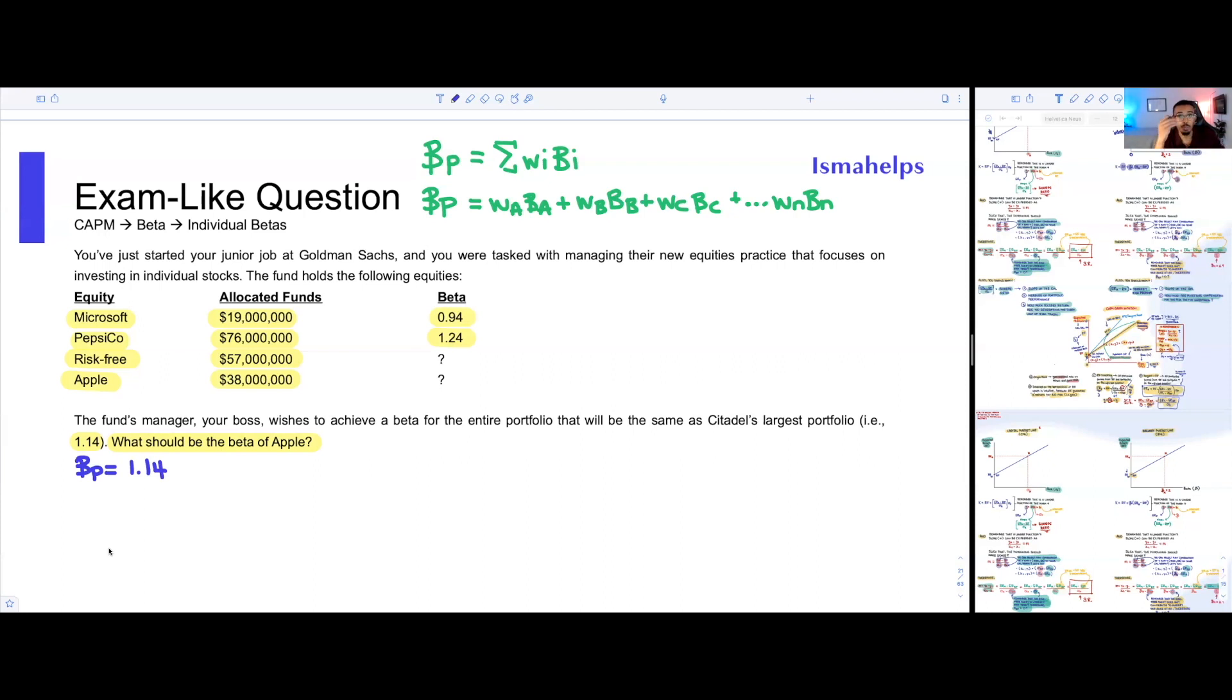They told you what they want the beta to be for the entire portfolio. So all that you have to do is go back to your formula, look for beta P, in other words, the beta of your portfolio, and just highlight that as information that you know that you have. We know we have this piece of information. However, we still don't have enough to solve for one individual piece of information, one missing variable.